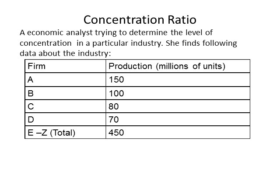An economic analyst is trying to determine the level of concentration in a particular industry. She finds the following data: Firm A produces 150 million units, Firm B produces 100 million units, Firm C produces 80 million units, Firm D produces 70 million units, and the remainder of the market — Firms E through Z — produce a total of 450 million units.